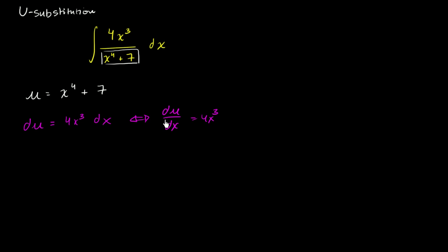When someone writes du over dx like this, this is really a notation to say the derivative of u with respect to x. It really isn't a fraction in a very formal way. But oftentimes you can kind of pseudo manipulate them like fractions. So if you wanted to go from here to there, you could kind of pretend that you're multiplying both sides by dx. But these are equivalent statements, and we want to get it in differential form in order to do proper u substitution.